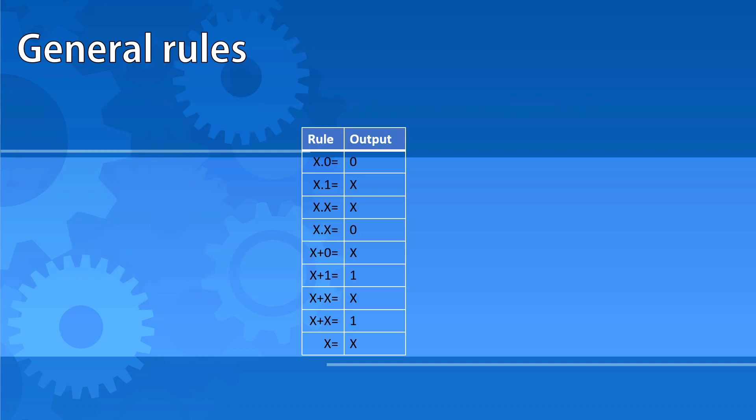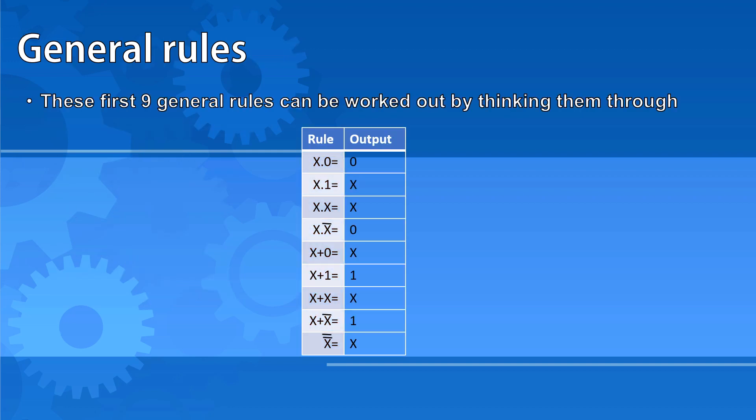The first nine general rules can be worked out by thinking them through. If we consider something AND zero, we know it's an AND with a zero in it, so the output will always be zero. Something AND one — if that something is a one, the output is going to be one; if that something is a zero, the output is going to be zero. So the output is the same as that something, meaning x AND one is just x.